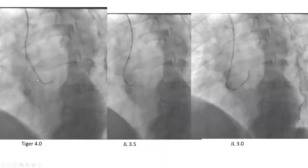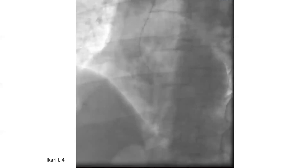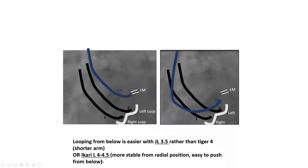These pictures illustrate the concept. Here's a comparison in a patient: Tiger 4, JL3.5, and JL3 — see how the catheter points more and more up as you go to a shorter arm. With an Ikari system, a 4 will probably engage this better than JL3 because of its different design. The same idea about Ikari applies to other guiding catheters like CLS or EBU — use EBU 4 to try to engage from below.